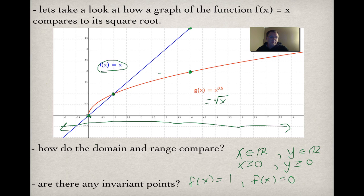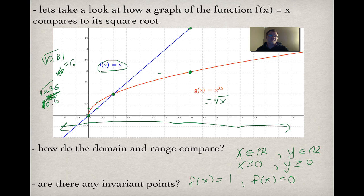Let's look at the little bulge between 0 and 1. When you take the square root of a height less than 1, the result is actually a bigger number. For example, the square root of 0.36 is 0.6, and the square root of 0.81 is 0.9. So wherever the original height is between 0 and 1, the square root graph is actually higher — that's why the curve bulges upward in that region.